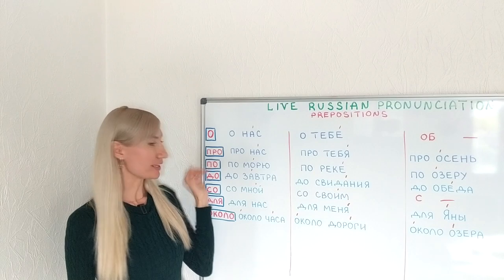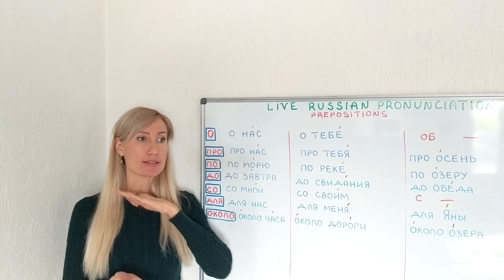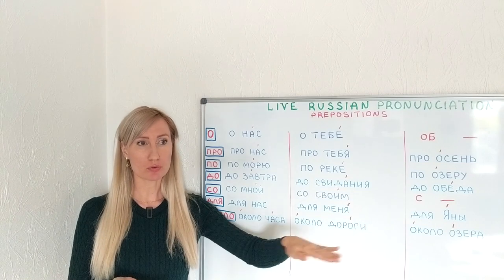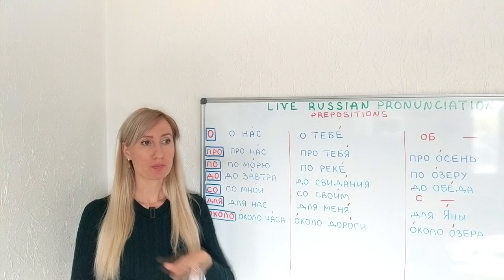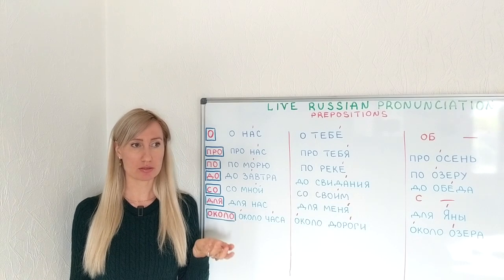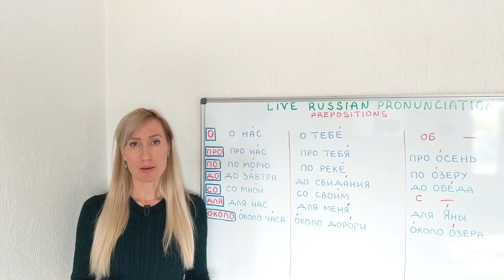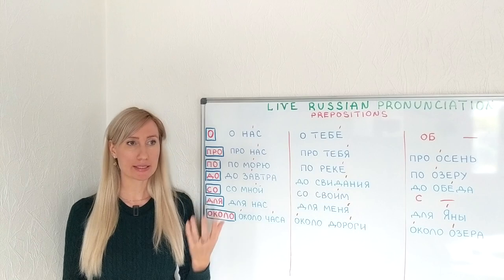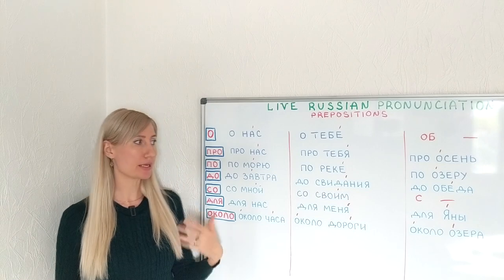Now we get to the preposition ПО, which is usually used with the dative case. In my examples it will mean moving along or moving on some surface. For example, ПА МОРЮ — on the sea. Compare with ПА РЕКЕ — on the river. In ПА РЕКЕ, ПО sounds even shorter.